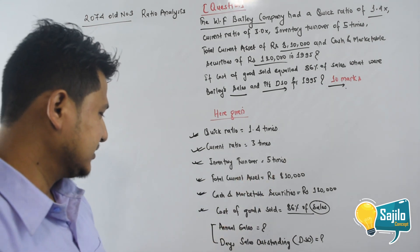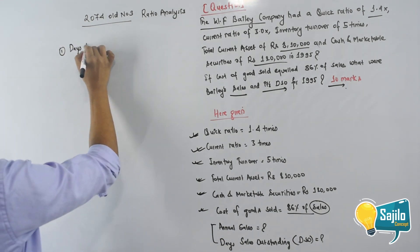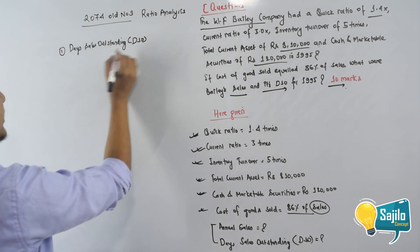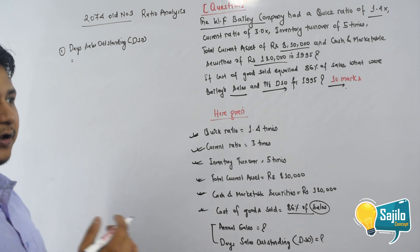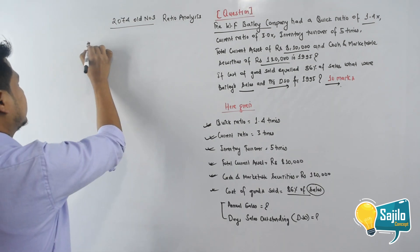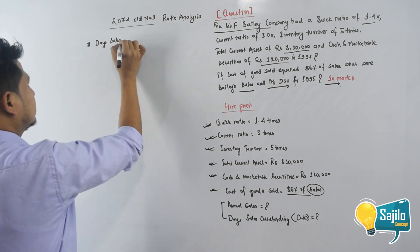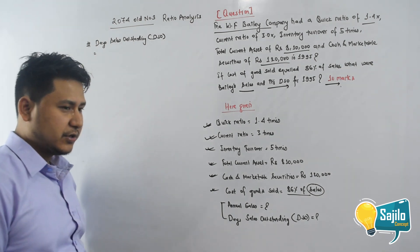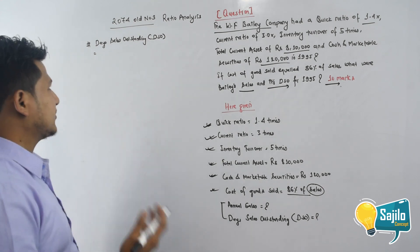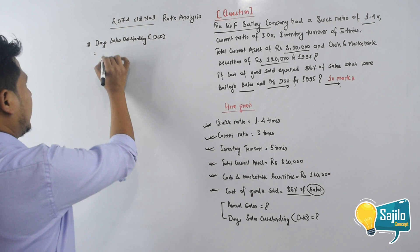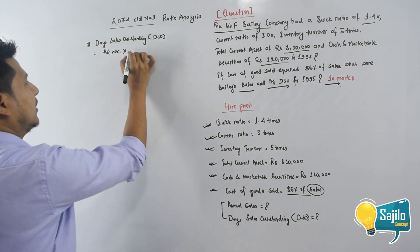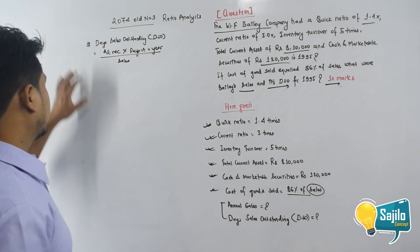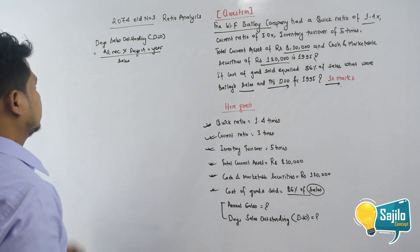The formula for Days Sales Outstanding (DSO) is: Account Receivable multiplied by days in a year, divided by Sales. So we need to find account receivable and sales.